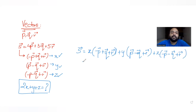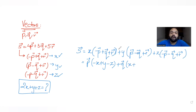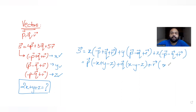Now I collect terms. Taking p common, the coefficient of p is (−x+y−z). Taking q common, the coefficient of q is (x−y−z). And taking r common, the coefficient of r is (x+y+z). So I have the three components of vector s̄ along p, q, and r expressed in terms of x, y, and z.